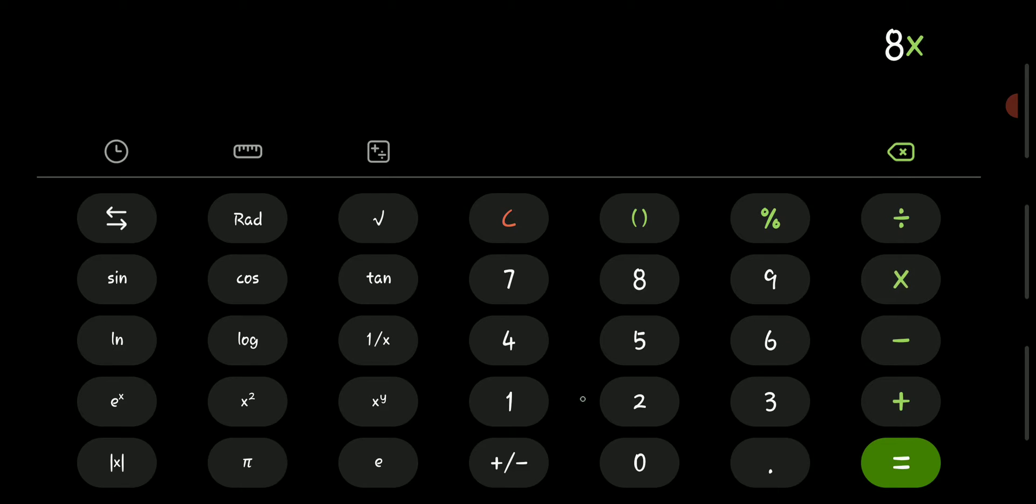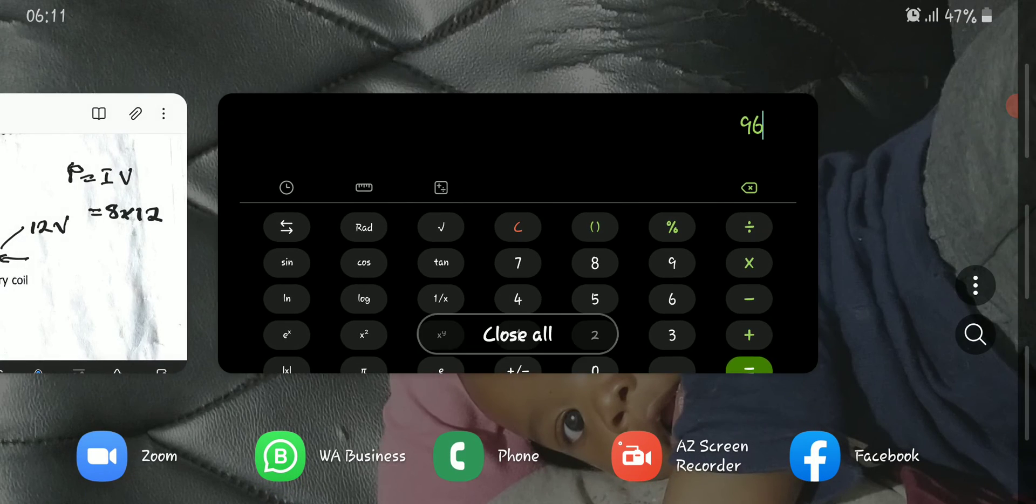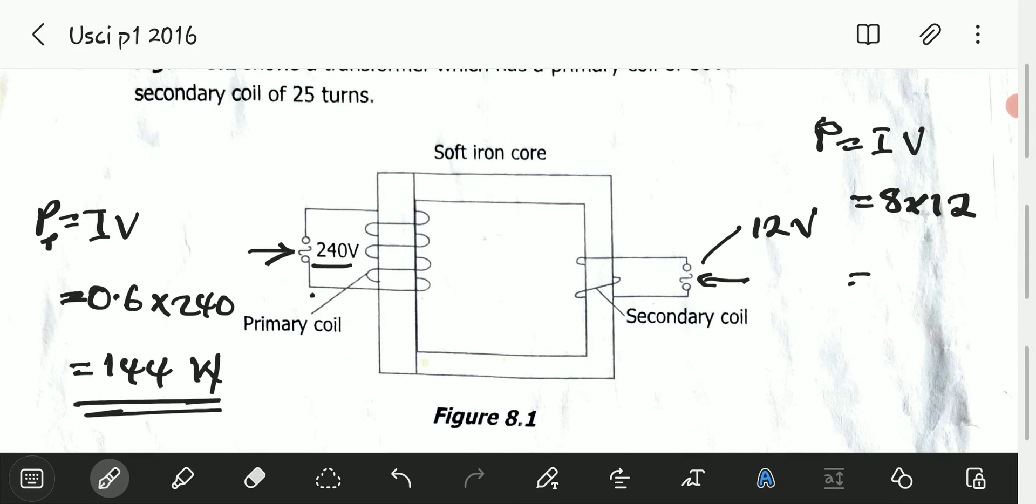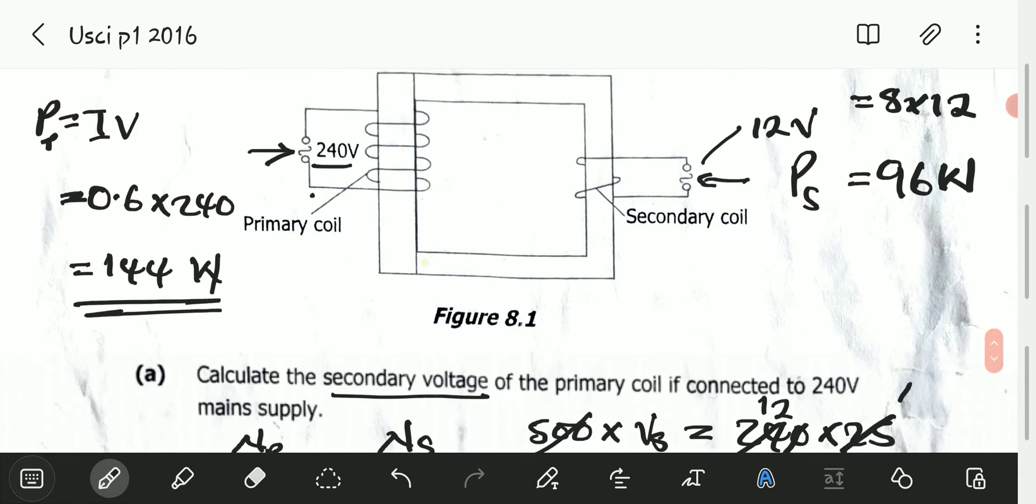8 multiplied by 12, this is 96, so here we have 96 watts. Power in the secondary is 96 and power in the primary is 144.